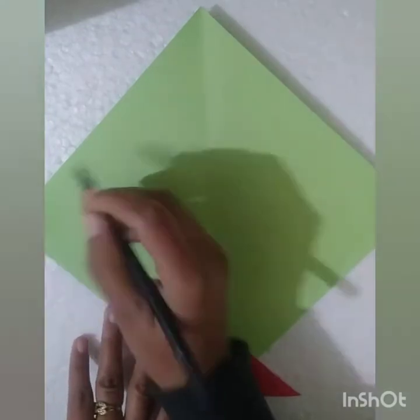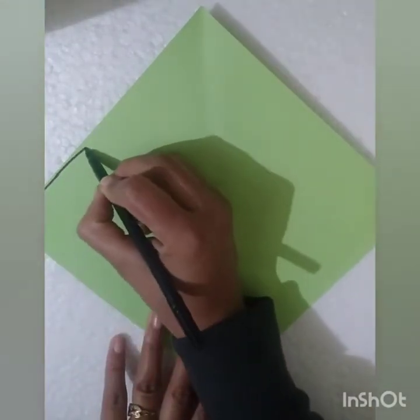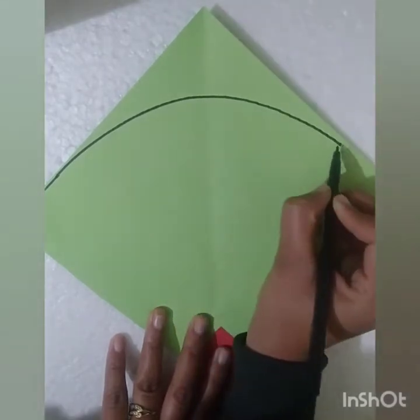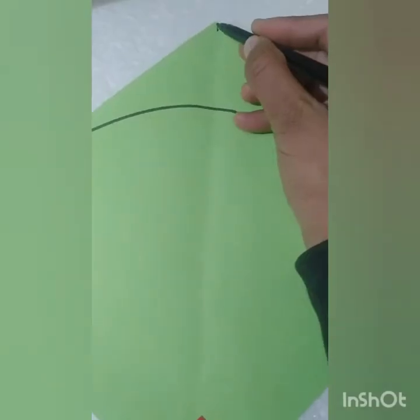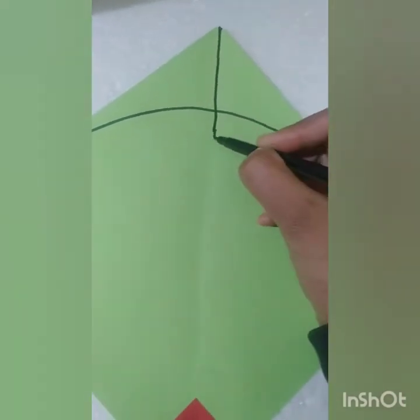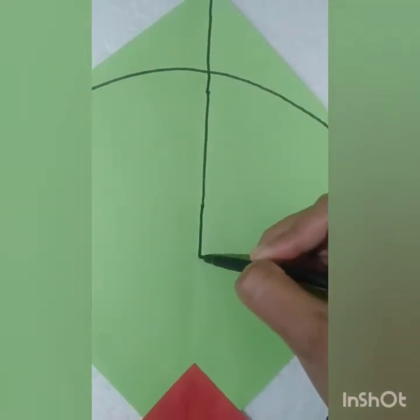Children, with a sketch pen, we will draw a curved line like this. So now children, we will make a vertical line like this.